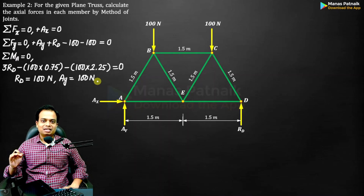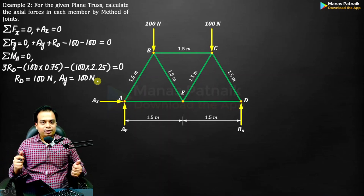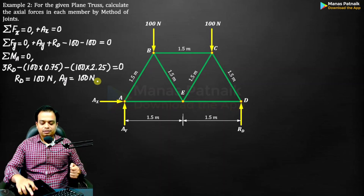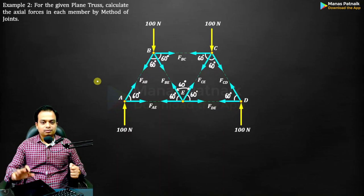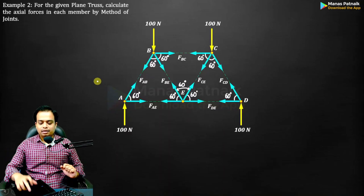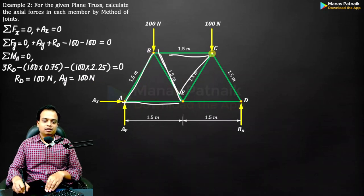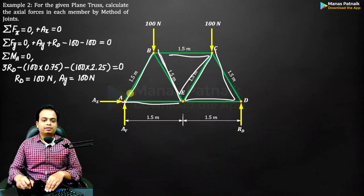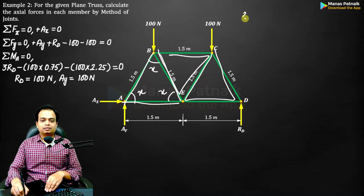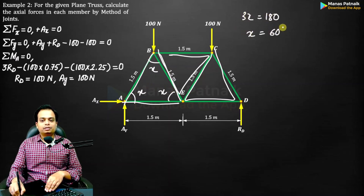Now, as I told you in the first example, from the joints draw the forces in the outward direction. And since you can see all the sides are of the same length — even here and here — that means it is an equilateral triangle. If these angles are X, then 3X = 180, so X equals 60 degrees. Very basic math.